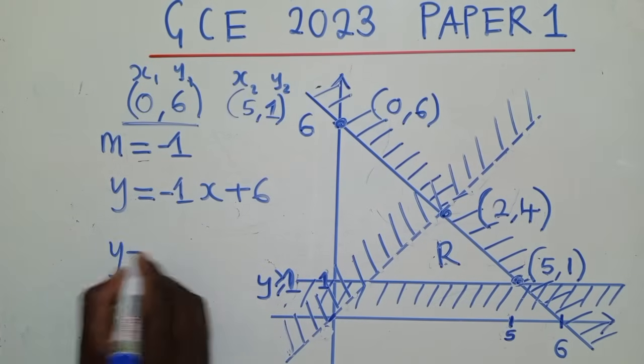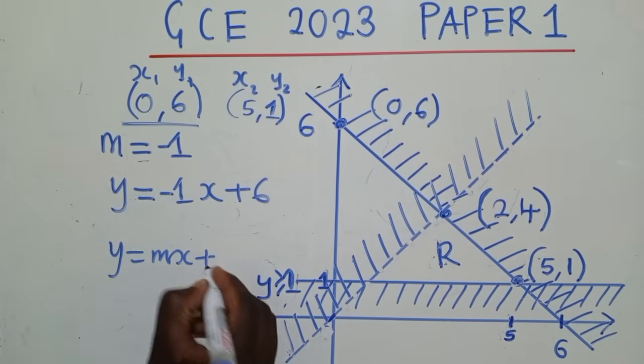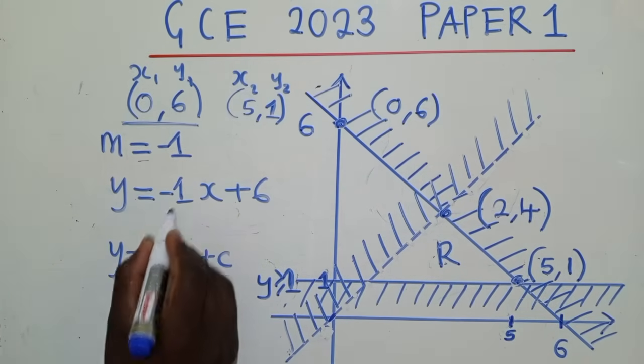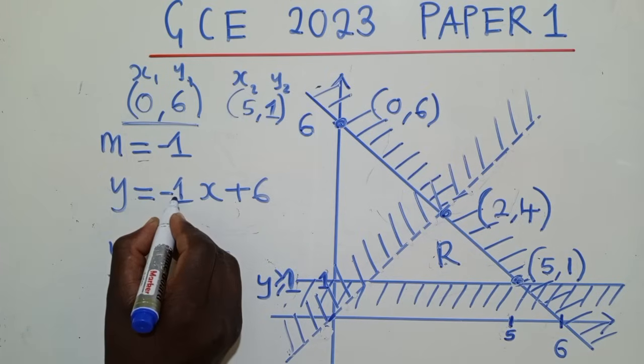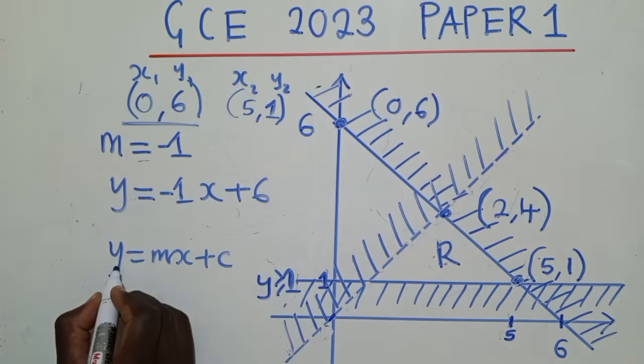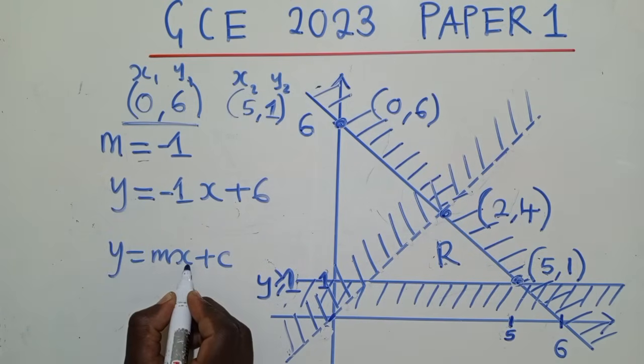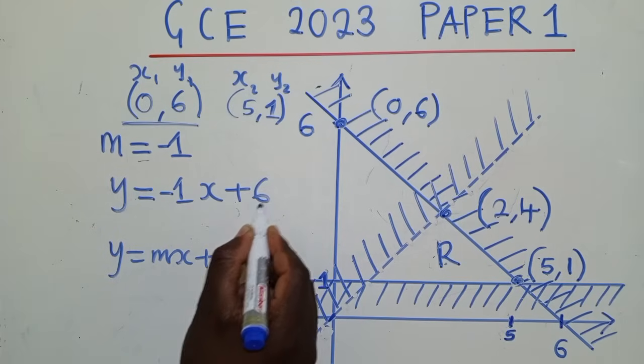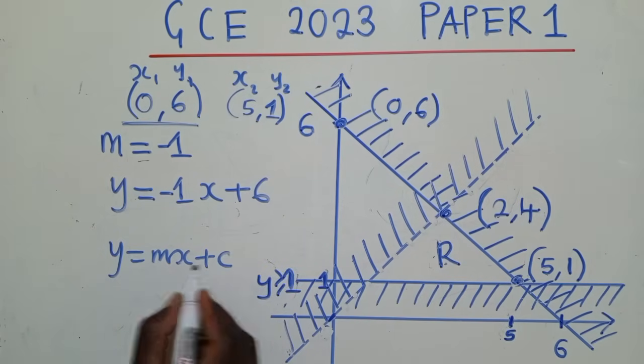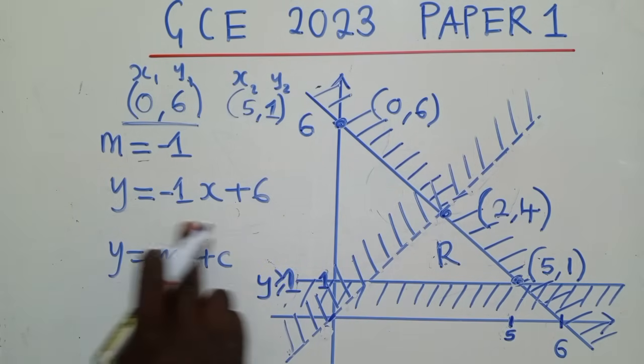So after getting this c, you come back and write that y is equal to our m is a negative 1. And then our c is a 6. Remember, the formula is like this. This is the formula. So where there is m, you put your m, which is a negative 1. You maintain y, you also maintain x. For the c, it's 6. Remember, we found our c to be equal to 6. So this is the equation.